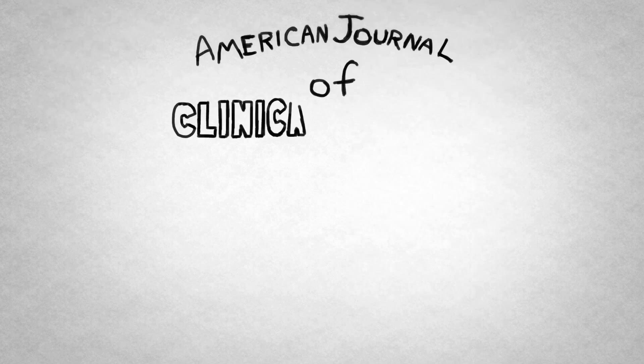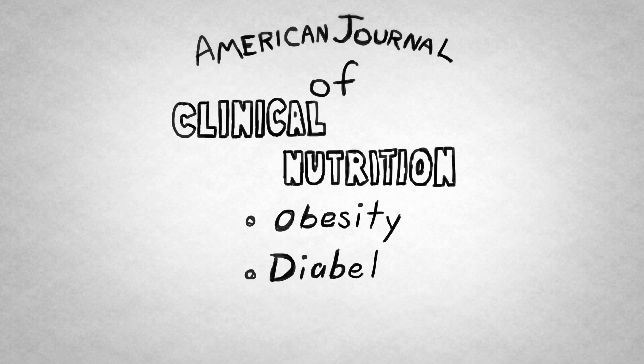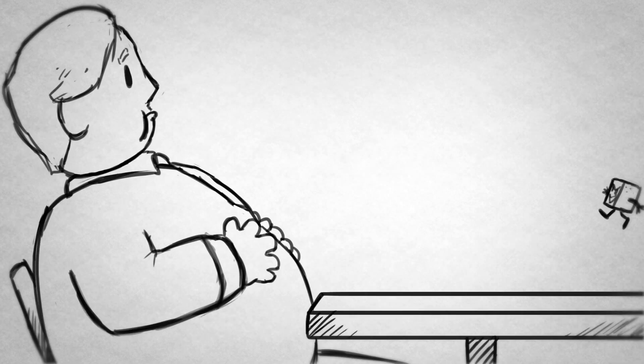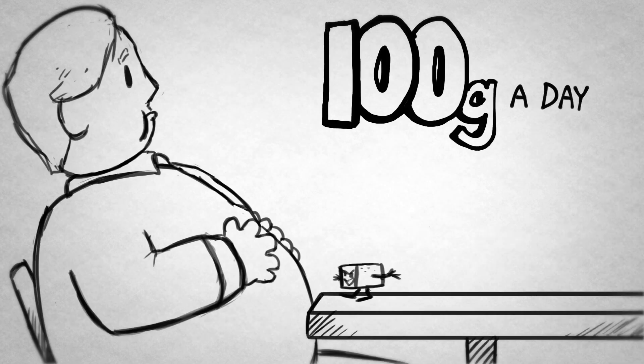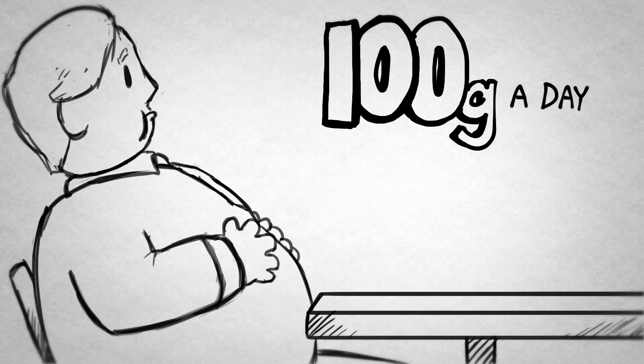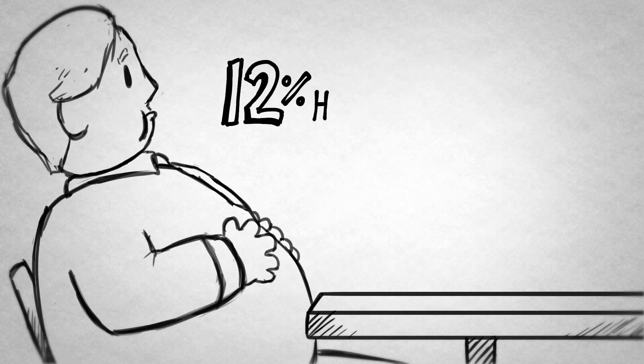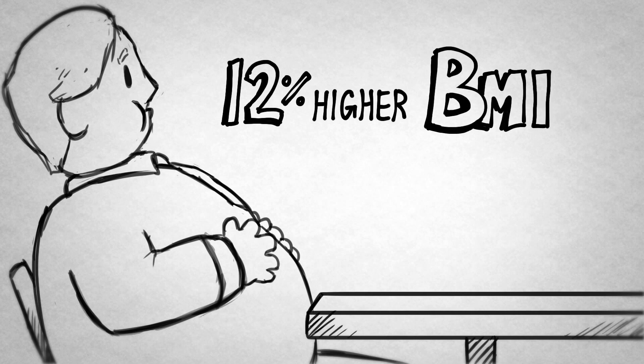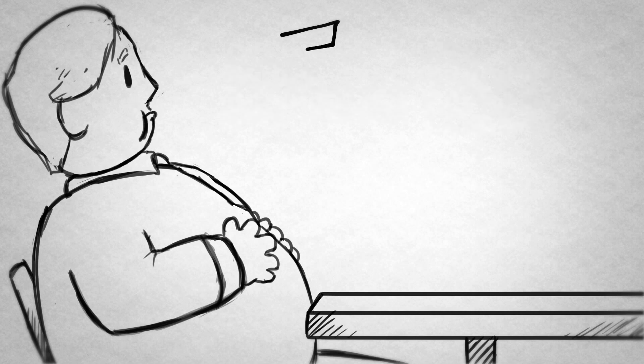The American Journal of Clinical Nutrition has linked added sugar intake to obesity, diabetes, and heart disease. People who ate over 100 grams of sugar a day, which is twice the daily allotment, had 12% higher body mass indexes than those who ate the healthy and recommended 50 grams or less.